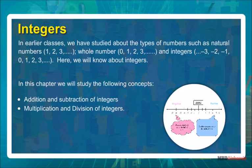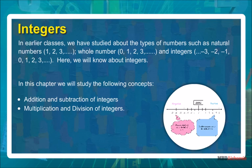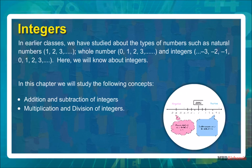In earlier classes we have studied about the types of numbers such as natural numbers 1, 2, 3 and so on; whole numbers 0, 1, 2, 3 and so on; and integers minus 3, minus 2, minus 1, 0, 1, 2, 3 and so on. In this chapter we will study the following concepts: addition and subtraction of integers, and multiplication and division of integers.